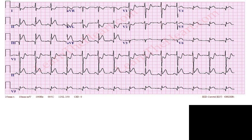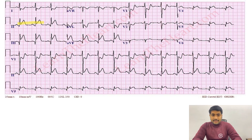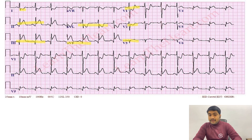This is another example: lead 2, 3, and aVF show ST segment elevation — that is the inferior wall MI. Leads 1 and aVL have ST segment depression. Then we have shelf-like depression in V1, V2, and V3 with a prominent R wave. So this is inferior wall MI plus posterior wall MI with some reciprocal depression in the lateral wall.